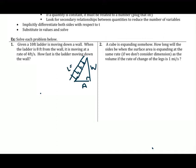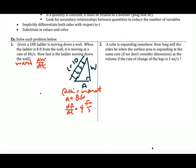Note that the ladder length doesn't change — it's always 10 feet. At this moment, A is 8 feet, and dA/dt is 4 feet per second. We want to find dW/dt. Using the Pythagorean theorem at this instant: 10 squared equals 8 squared plus W squared, so W equals 6. Remember, W equals 6 only at this moment — all that information in red is only true at the instant being referenced.